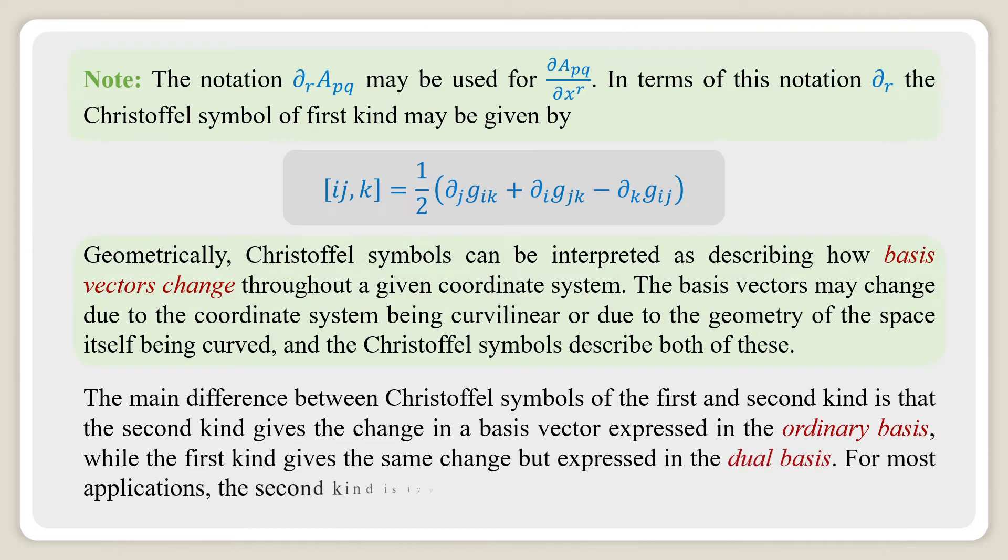The main difference between Christoffel symbols of the first and second kind is that the second kind gives the change in a basis vector expressed in the ordinary basis, while the first kind gives the same change but expressed in the dual basis. For most applications, the second kind is typically more useful.